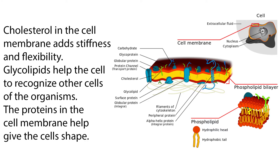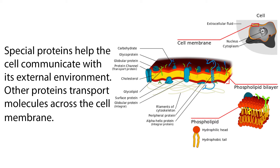Cholesterol in the cell membrane adds stiffness and flexibility. Glycolipids help the cell recognize other cells of the organism. The proteins in the cell membrane help give the cells shape, and special proteins help the cell communicate with its external environment.